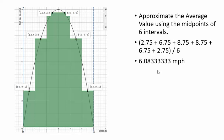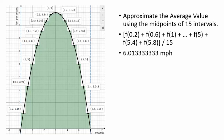To get a better estimate of the average speed, we can use more intervals. Let's split this into 15 intervals, again using the midpoints of each interval. To approximate the average speed, I plug in 0.2 into the function to get the speed at 0.2 seconds, then 0.6, etc. I find all these values, add them all up, and divide by 15. Doing that gives 6.01333 feet per second. So with six intervals we had 6.08, with 15 we have 6.01 — we can make a pretty good guess that the average speed is going to be around 6 feet per second.